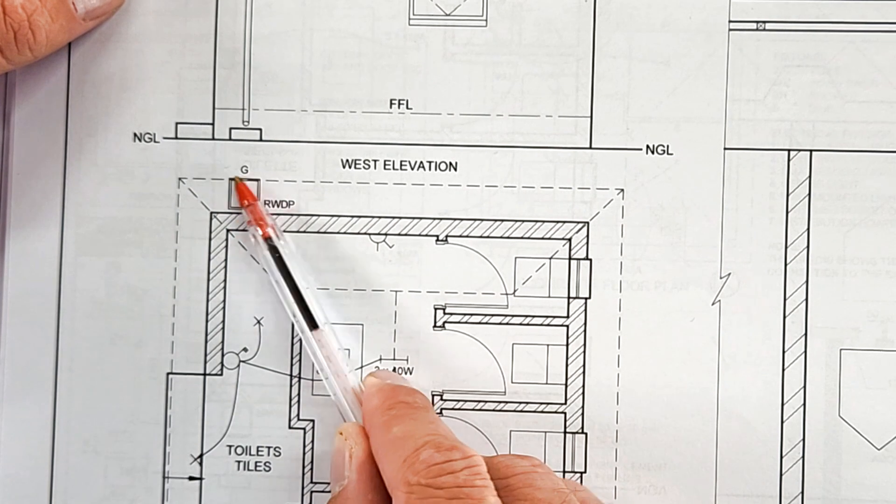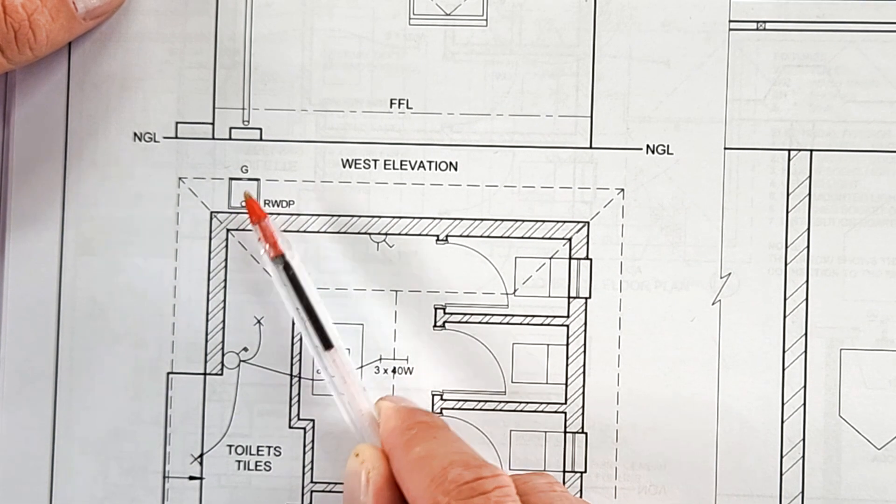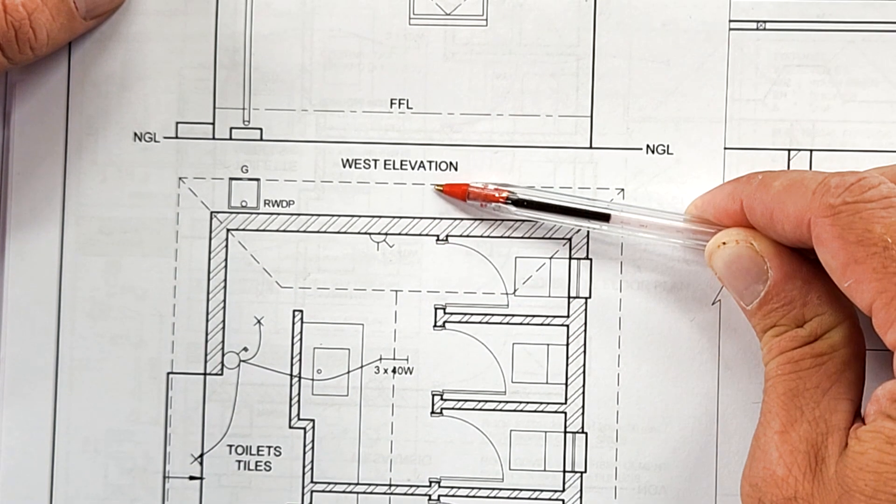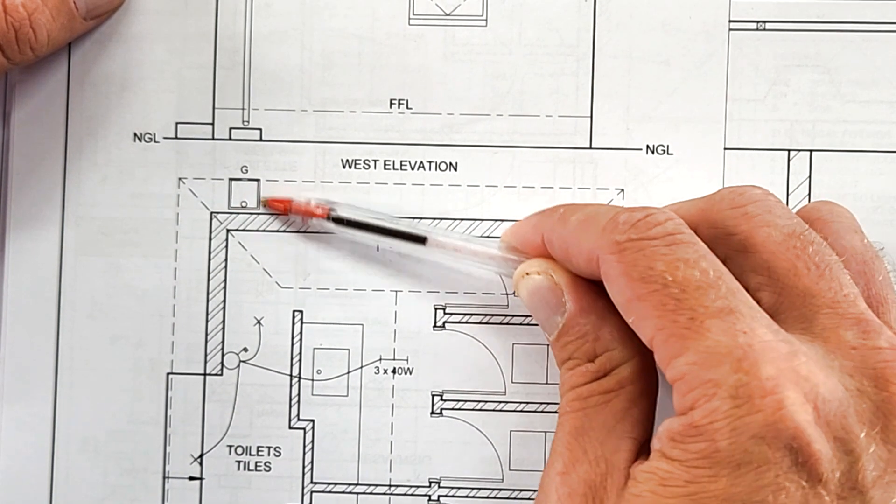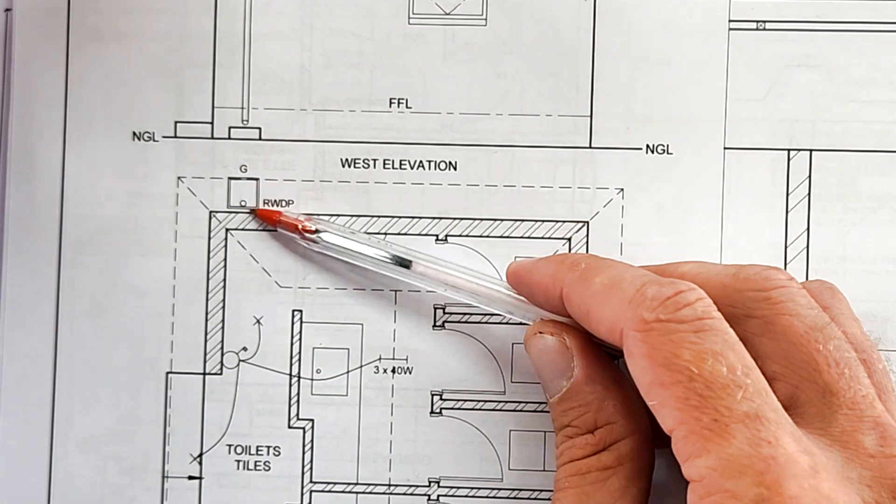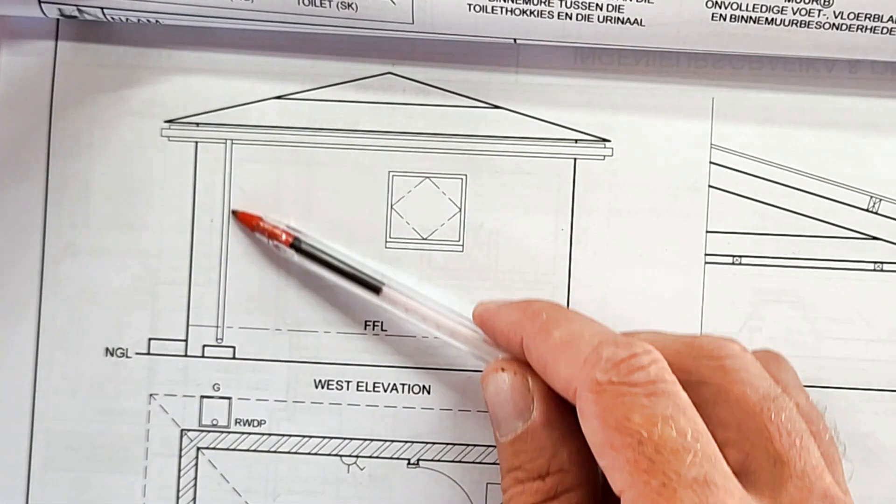There is an example of the rainwater downpipe with its gully. If the water falls on this roof, it runs down into the gutter and into the gully with the rainwater downpipe. That's something that's important for you to add in the end. You can see it there also in the elevation.